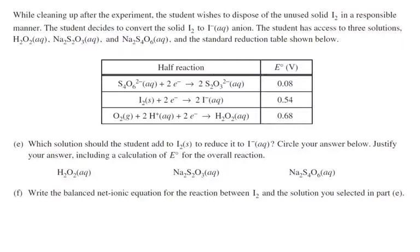Now we're talking about, while cleaning it up after the experiment, the student wishes to dispose of the unused iodine, solid iodine, in a responsible manner. The student decides to convert the I2 to I- anion. The student has access to three solutions: H2O2, sodium S2O3 (sodium thiosulfate), and Na2S4O6, and the standard reduction table shown. Which solution should the student add to I2 to reduce it to I-? Let's look here. We're talking about this reaction here, and we have the I2, and we want to change it to I-, so we want this reaction to happen in a forward direction. That's going to be reduction. So this is going to be our E0 of reduction, and that's going to be positive 0.54 volts.